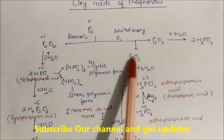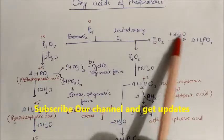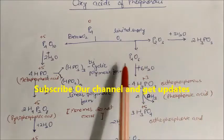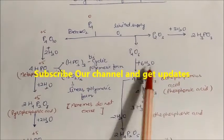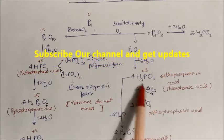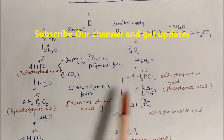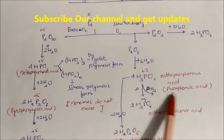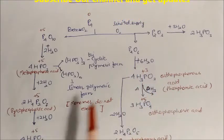With limited supply of oxygen, if you add three molecules of water to these compounds, it will form two molecules of H₃PO₃. While P₄O₆ with six molecules of water gives H₃PO₄. This acid is called orthophosphorus acid.